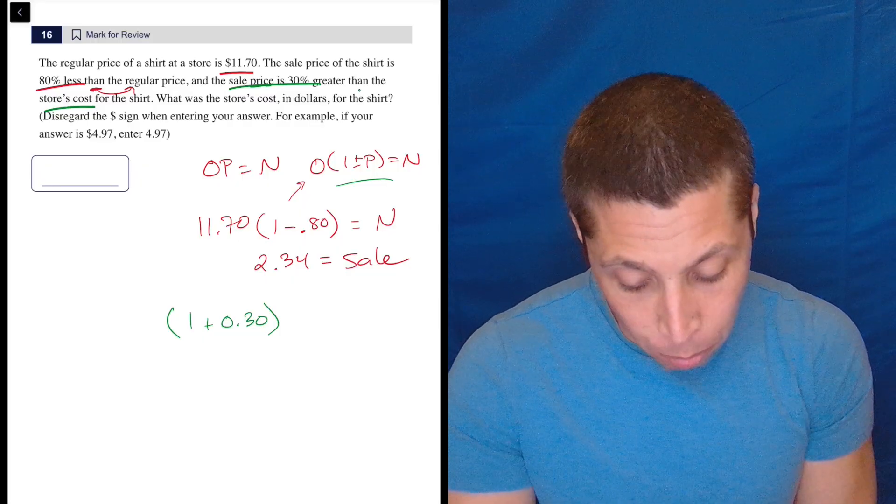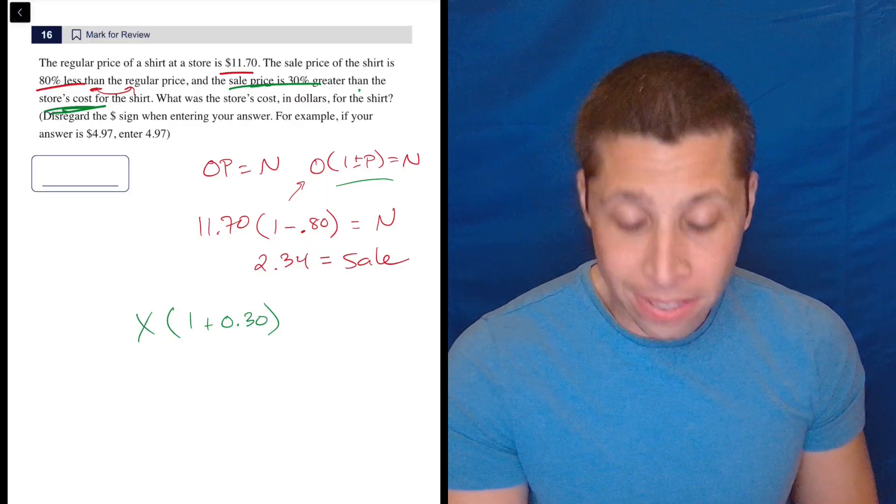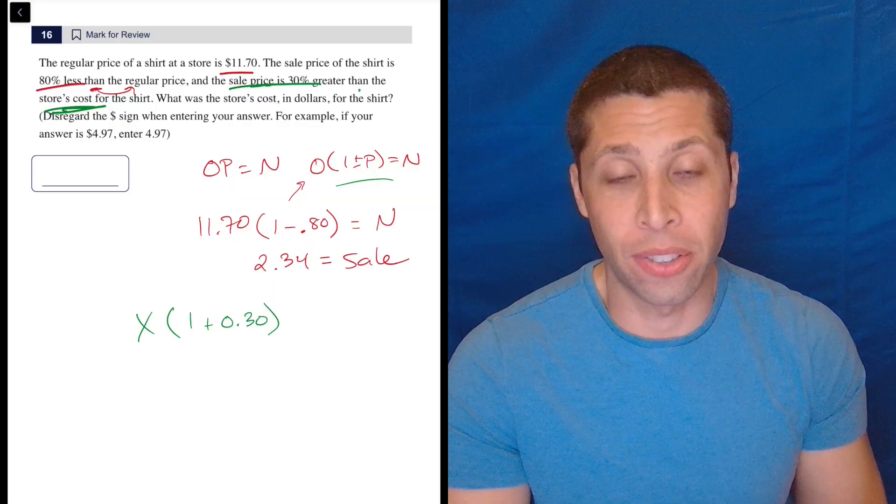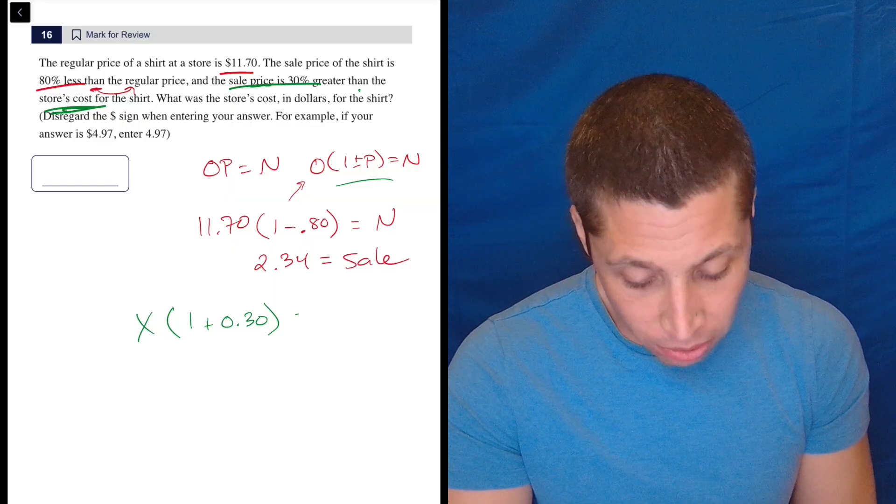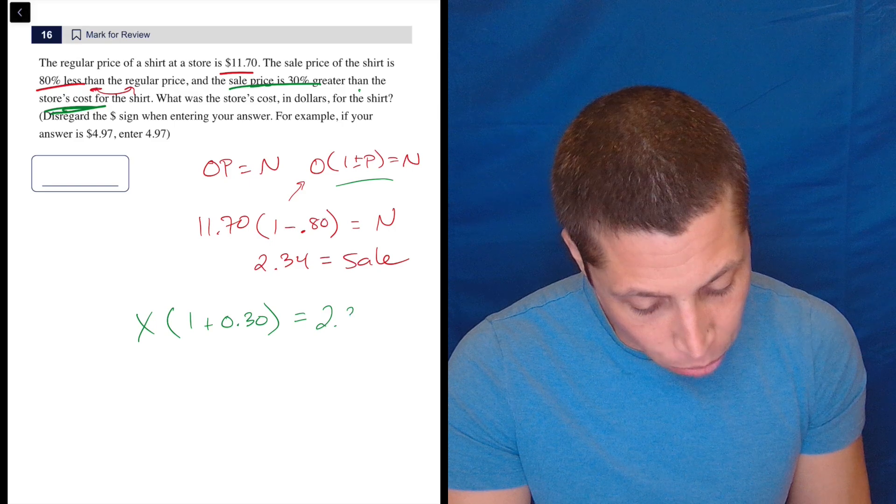And the then is pointing us to the cost. So the cost, we don't know. This is a classic SAT move with percentage questions is now we have to do it in reverse. So the sale price is 30% greater. So that's 2.34 here.